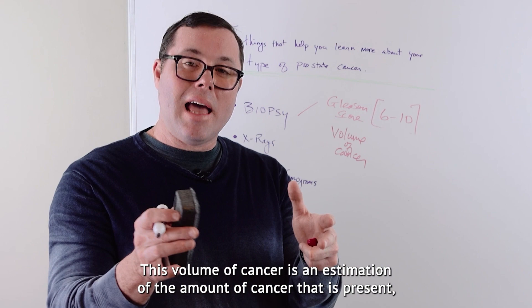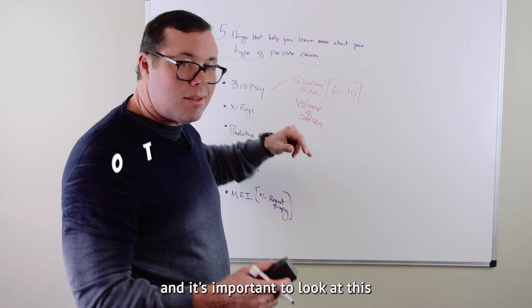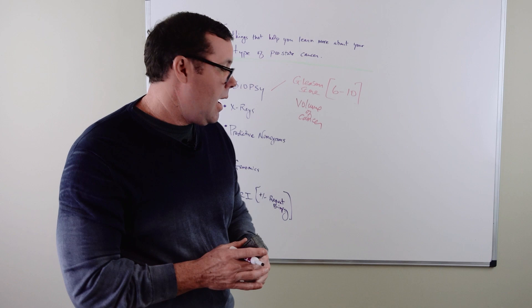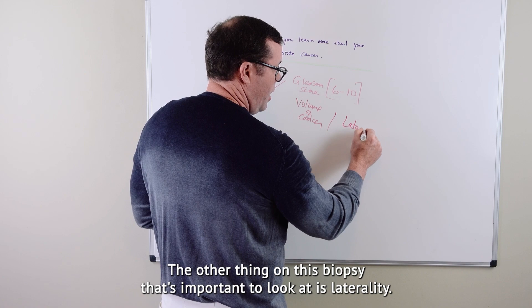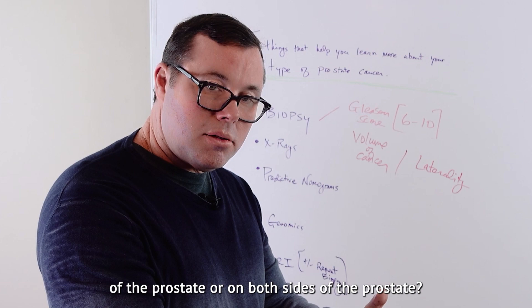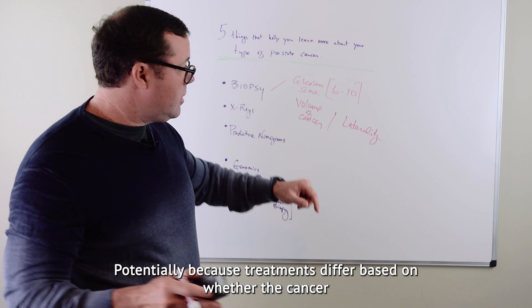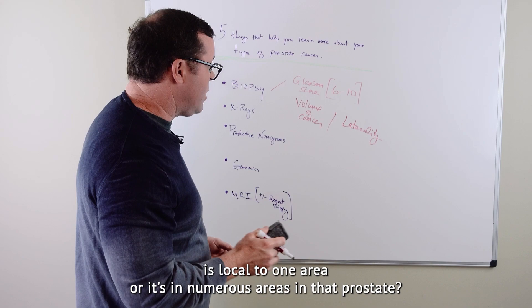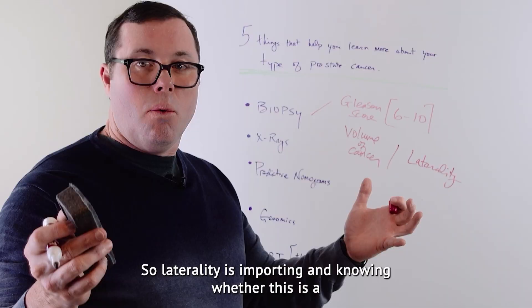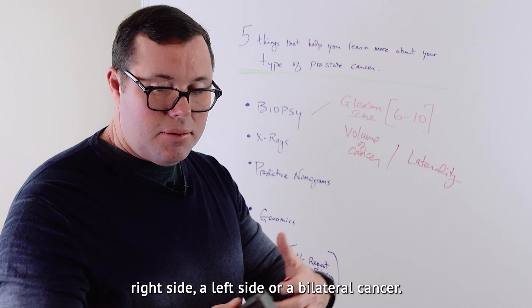It's different when you have 1 out of 12 cores positive for cancer and you compare that to someone that has 10 out of 12 cores positive for cancer. This volume of cancer is an estimation of the amount of cancer that is present. And it's important to look at this to get an idea of your specific cancer to know your volume of cancer. The other thing on this biopsy that's important to look at is laterality.